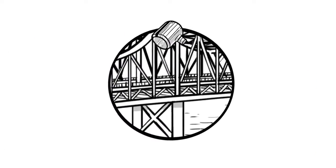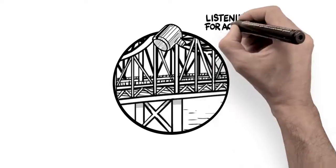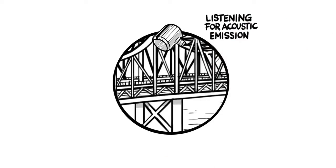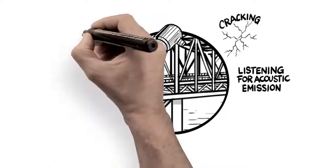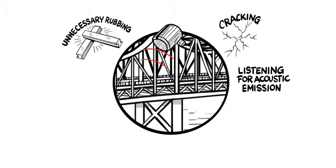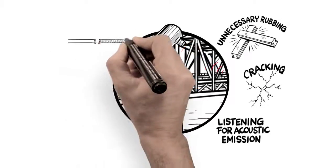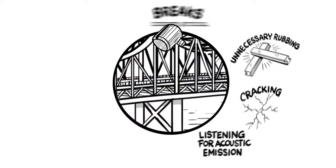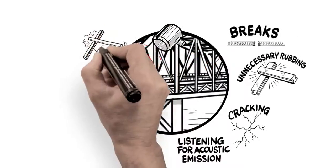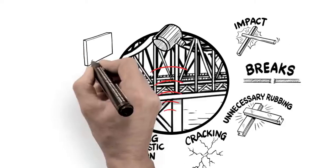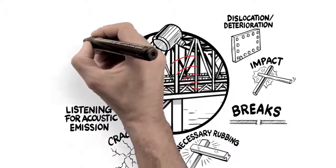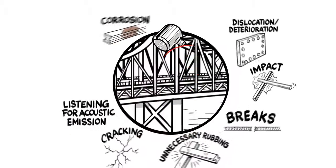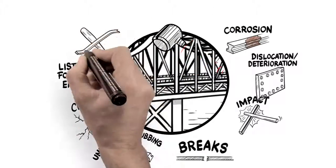Those remote sensors listen for a specific sound wave or acoustic emission in the material that occurs when a crack initiates or grows, when bridge components unnecessarily rub, when a suspension wire or cable breaks, when there's an accidental impact, when dislocation or deterioration takes place, when active corrosion propagates or even when vandalism occurs.